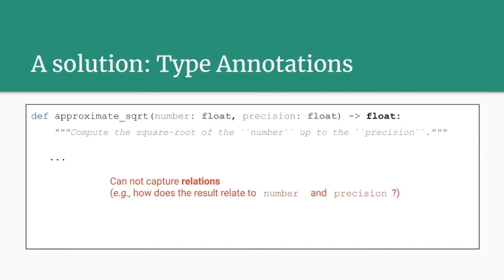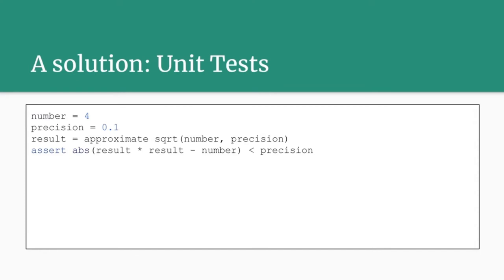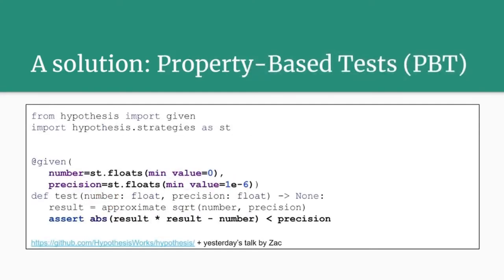You can write unit tests — pick a couple of input points and assert that certain properties hold on the result. The problem with unit tests is that we often forget about edge cases; we only pick a few obvious input points. For example, I almost always forget to check for NaN, and in the case of computing an approximation, NaN can even result in an endless loop. An alternative is property-based tests: instead of picking only a few input points, you use a framework like Hypothesis and specify the whole input domain.